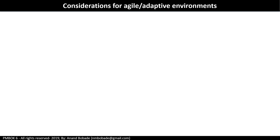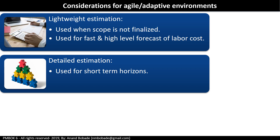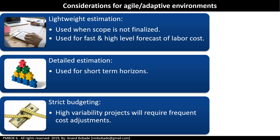Considerations for agile and adaptive environments: estimation in traditional versus adaptive projects is different. In agile projects, sprint duration and team are fixed — in other words, cost and duration are fixed and scope is adjusted. Key considerations include lightweight estimation, used when scope is not finalized and used for fast, high-level forecasting of labor cost; and detailed estimation, used when scope is clear and finalized, for short-term horizons. Strict budgeting is required for high-variability projects with constantly changing objectives and requirements, to ensure there is ROI for the project.